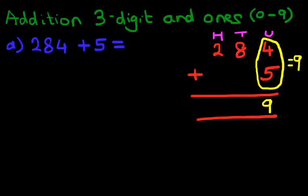Now we add the tens column. Well, we only have 8. There is nothing over here. So 8 plus 0 is 8. The same goes for the hundreds column. 2 plus 0 is 2. And that is our answer. So 284 plus 5 is 289. That is correct.